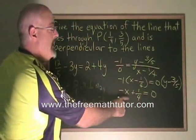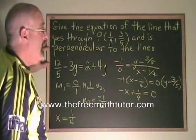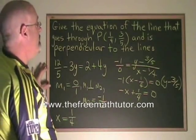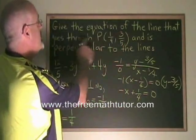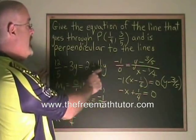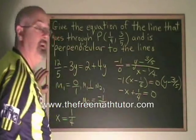This is the right answer in standard form, and this answer cannot be given in slope intercept form. So therefore, the equation of the line that goes through the point 1 quarter, 3 fifths and is perpendicular to this line is negative x plus 1 quarter equals 0.